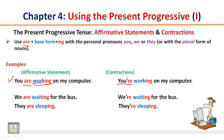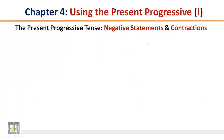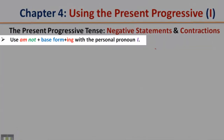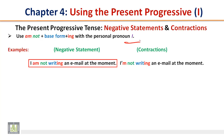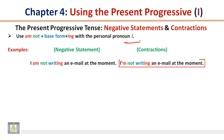You, we, they — that's the personal pronoun you use. The present progressive tense: negative statements and contractions. Use am not plus base form plus -ing with the personal pronoun I. Example — Negative statement: I am not writing an email at the moment. Contraction: I'm not writing an email at the moment.